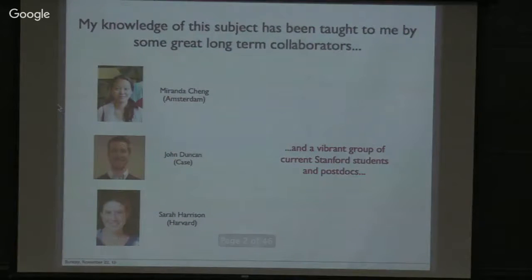And in fact, a lot of the talk will be extremely introductory, just explaining what moonshine is, what are the objects that it relates, and why it's interesting. To the extent that I'll say anything new, it's based on material that was taught to me by some treasured collaborators, some mathematicians, Miranda Chang, who's either in Amsterdam or Cambridge, John Duncan, who's actually moved from Case now, and Sarah Harrison, who is my student and is now at Harvard, and then a bunch of postdocs and students at Stanford who keep teaching me new things about related ideas.